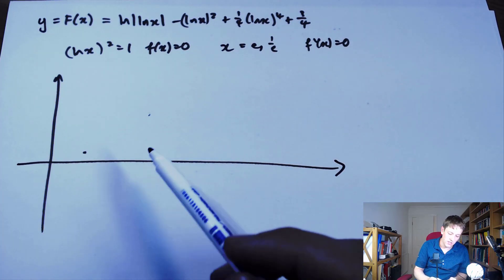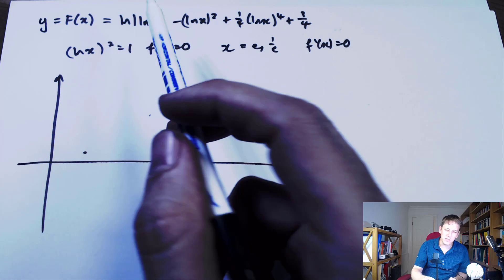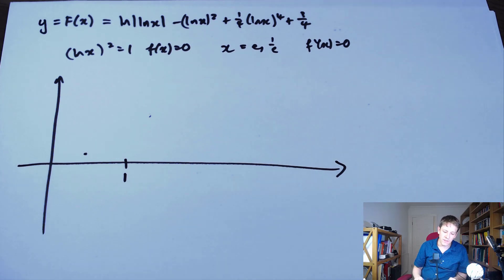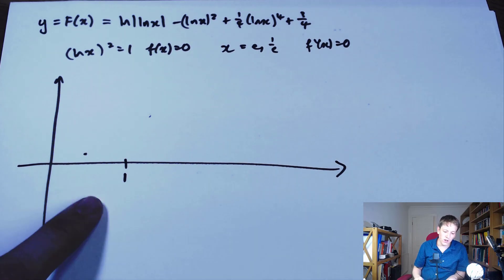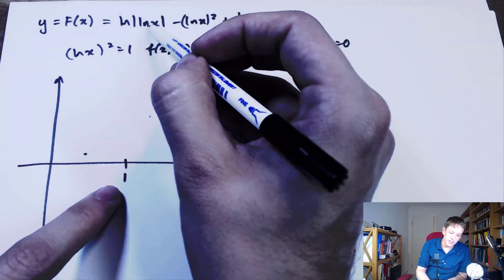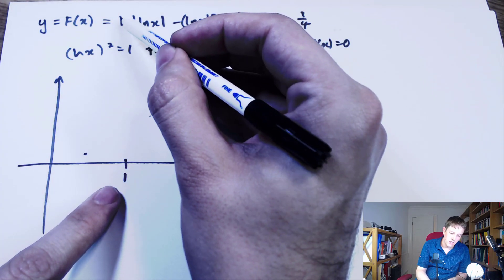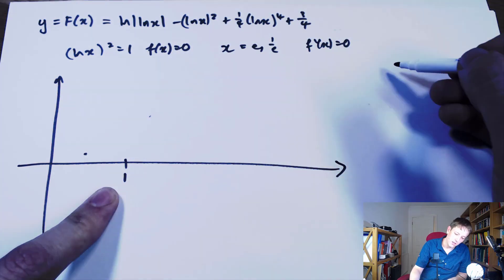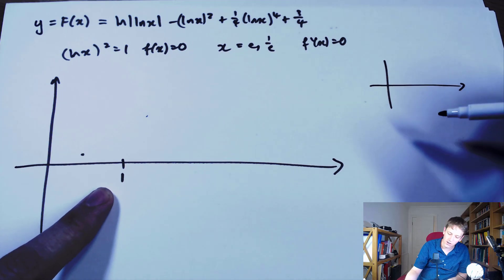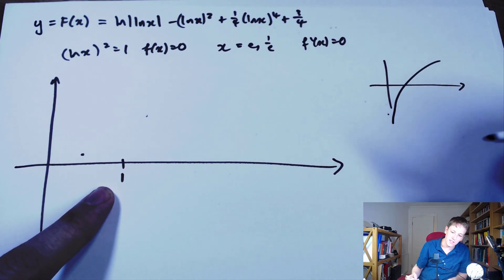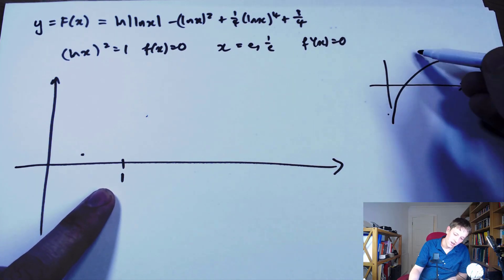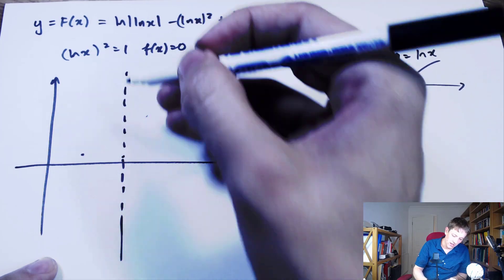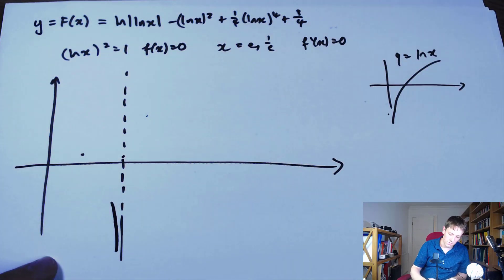We also need to think about the special point x = 1. Capital F is not defined at 1, and when x → 1, log x → 0, so we get log|log x| → log|0|, which tends to −∞. So the graph has a vertical asymptote at x = 1, coming down to −∞ on either side.